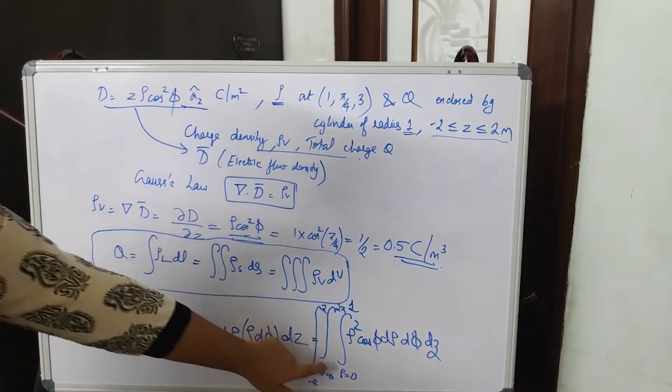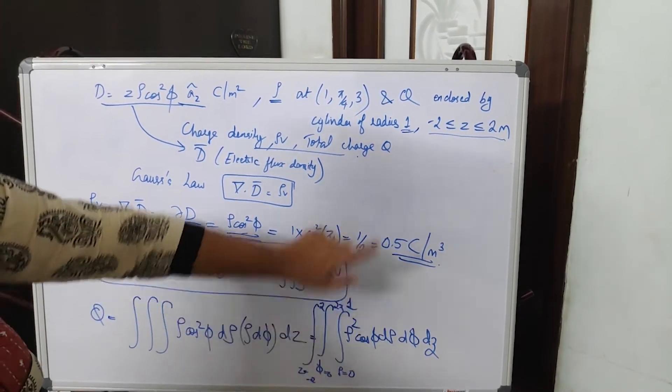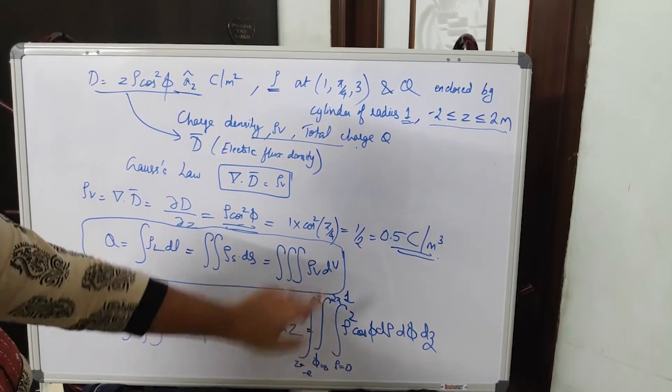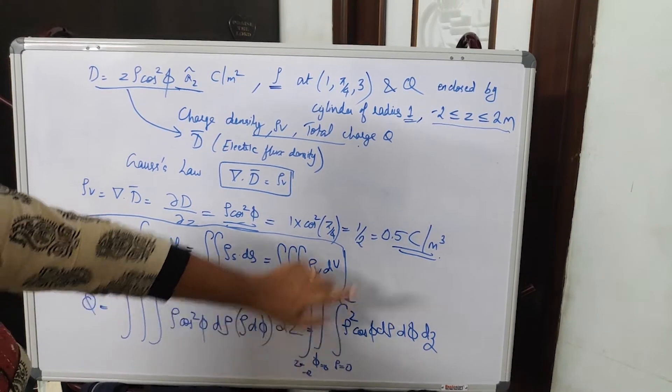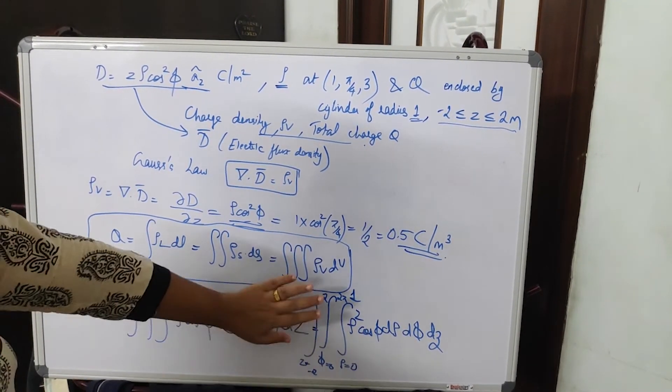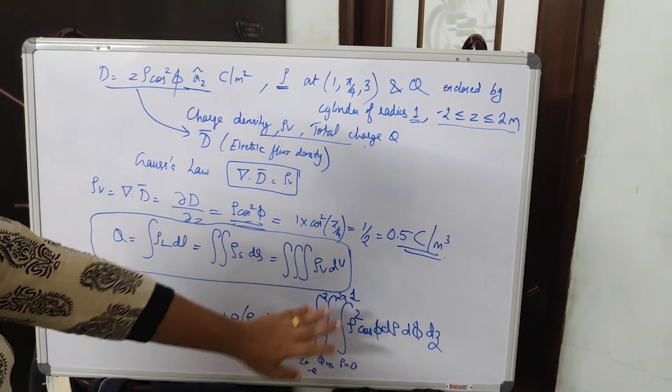So I have explained the limits. Rho varying from 0 to 1 because radius is 1. Phi, it is the whole angle, so 0 to 2 pi. Unless specified, phi will be 0 to 2 pi. And then Z value, they have given minus 2 to plus 2. So when you apply the limits, you will get the answer.